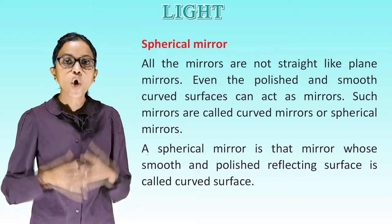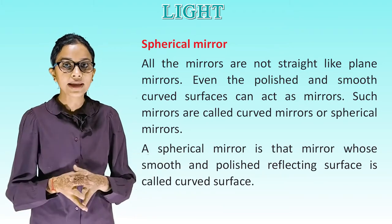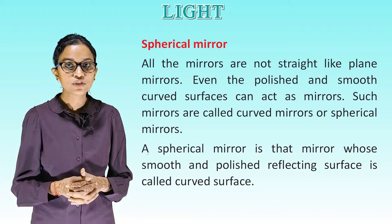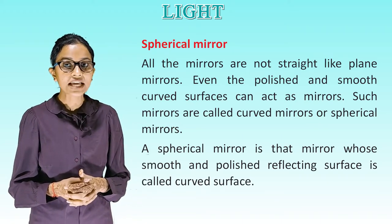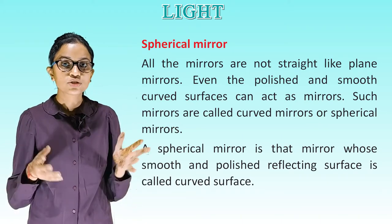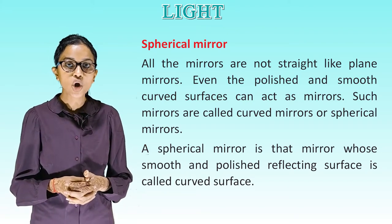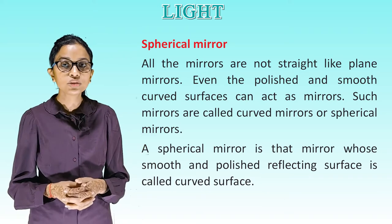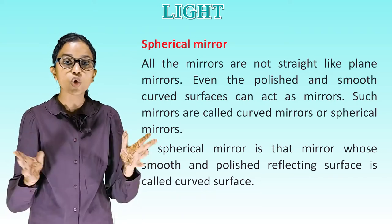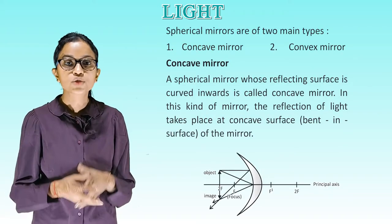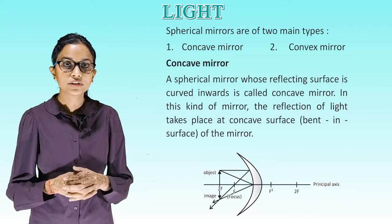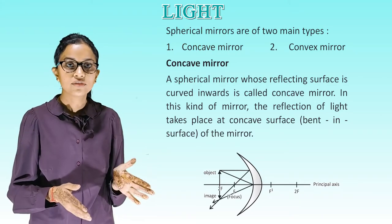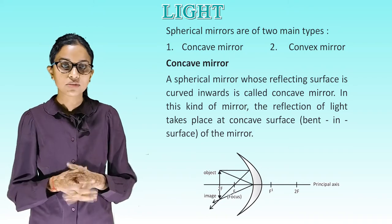Spherical mirrors: all mirrors are not straight plane mirrors — even polished and smooth curved surfaces can act as mirrors. Such mirrors are called curved mirrors or spherical mirrors. A spherical mirror is one whose smooth and polished reflecting surface is curved. Spherical mirrors are of two main types: concave mirror and convex mirror.